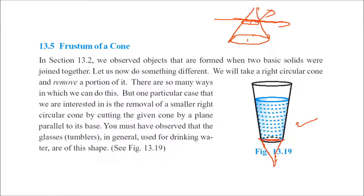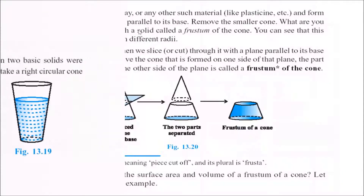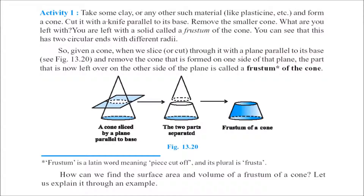So, it has been cut from here. You have observed these kind of tumblers or glasses we use generally for drinking water. Let us see how this frustum is formed. You just have to take some clay, make a cone, and use a knife or something to remove this portion. If you remove this portion, this area is the frustum. Frustum is a Latin word meaning 'piece cut off,' and the plural of frustum is frusta.